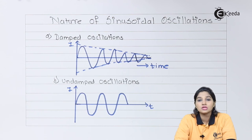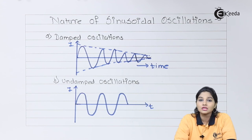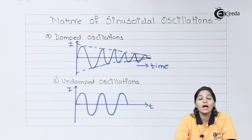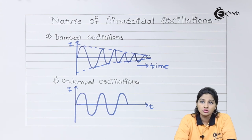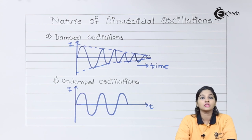So, damped and undamped are the two types of oscillations produced by sinusoidal oscillators at the output. This covers the classification of oscillators and the nature of waveforms that can be produced by oscillator circuits. I hope you understood this topic — thank you very much for watching. Stay tuned to eKira, subscribe to eKira.